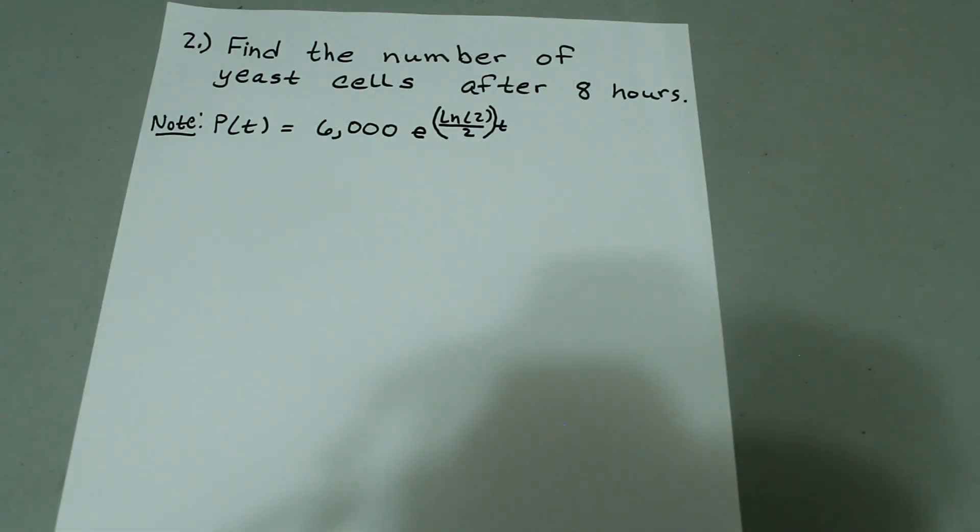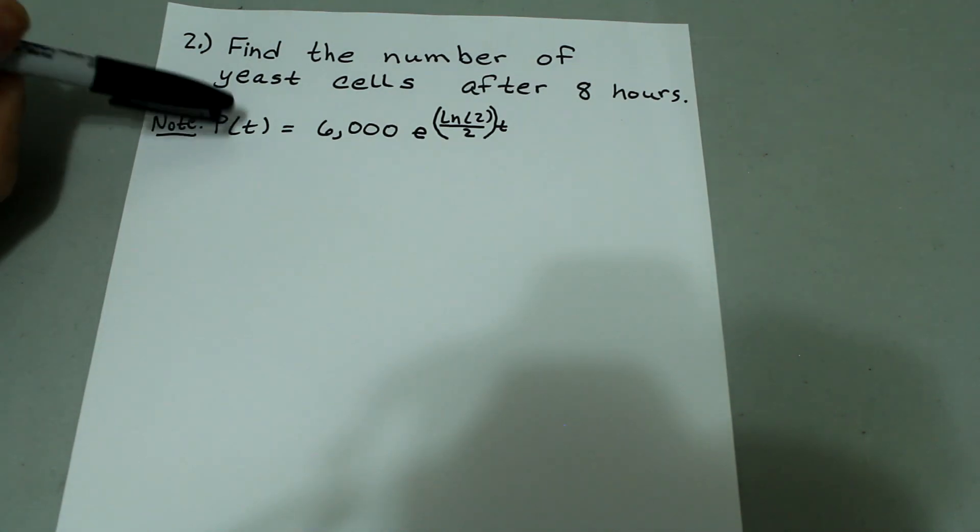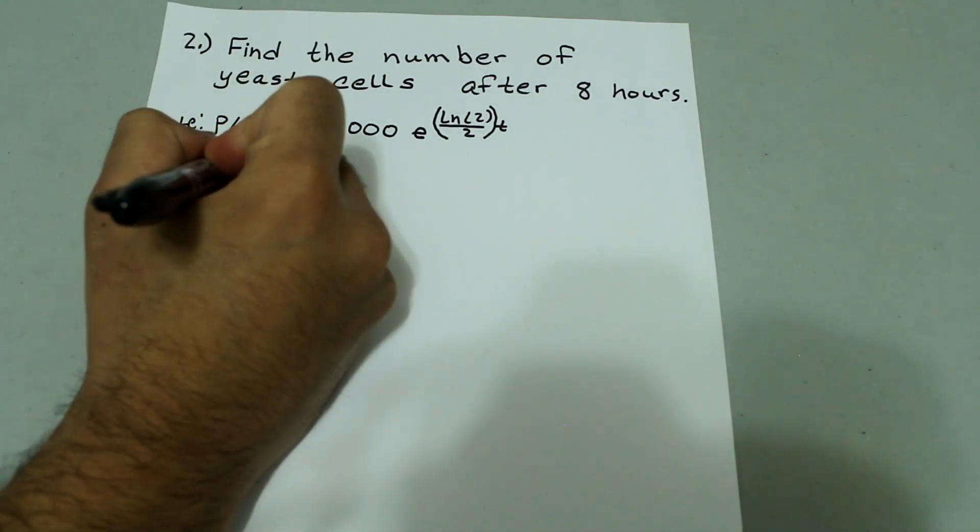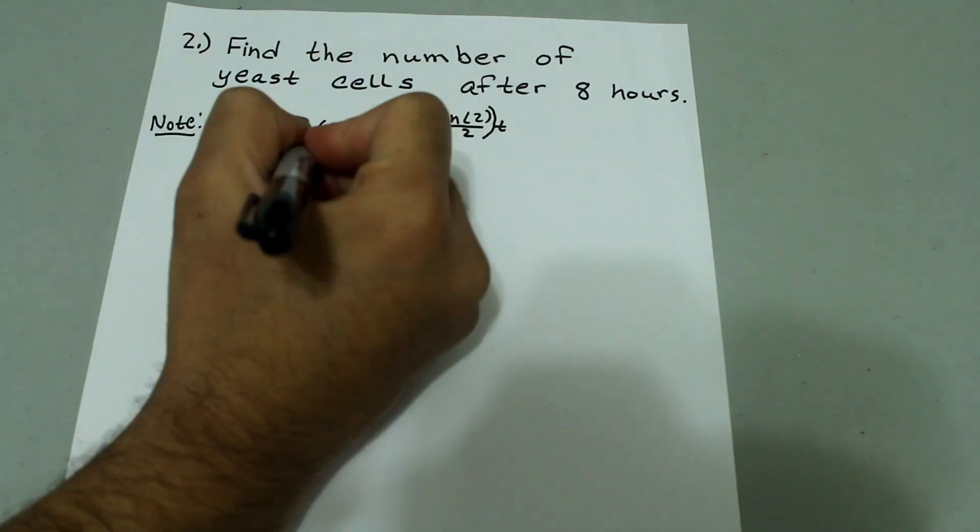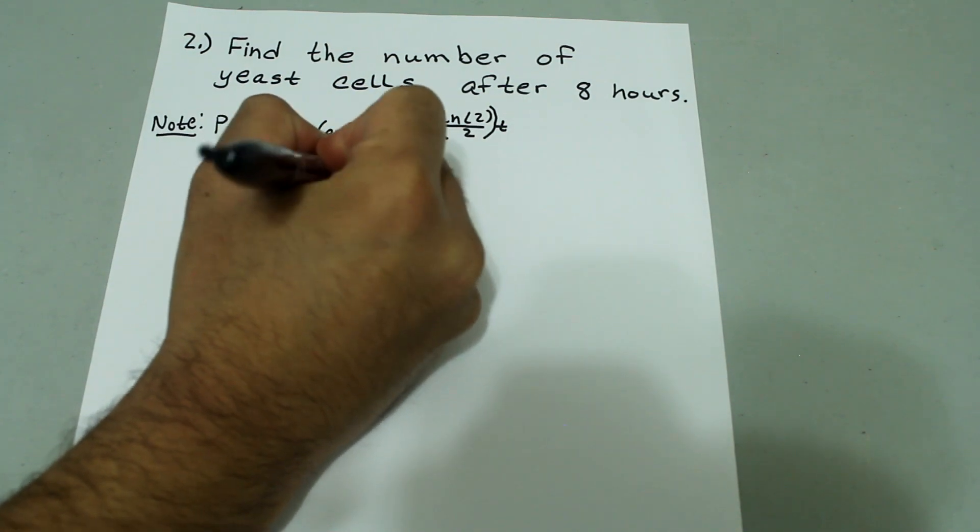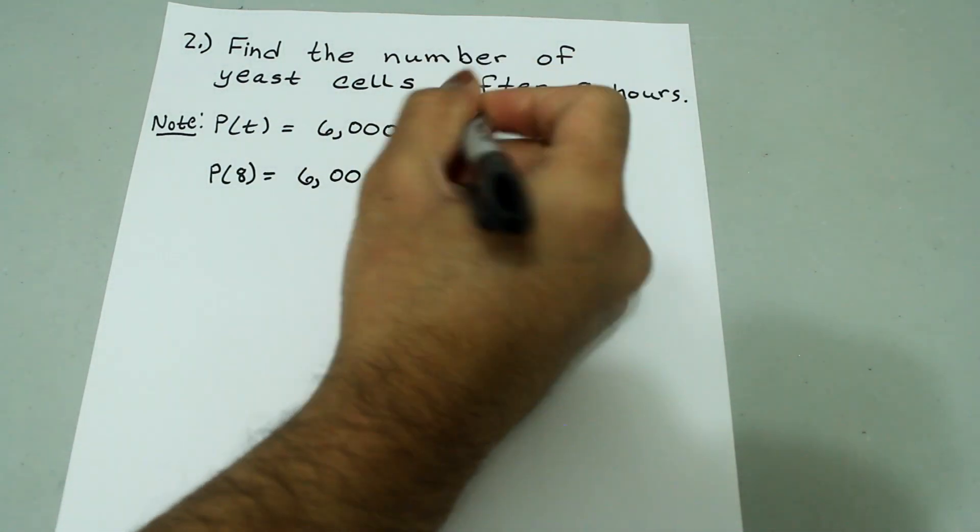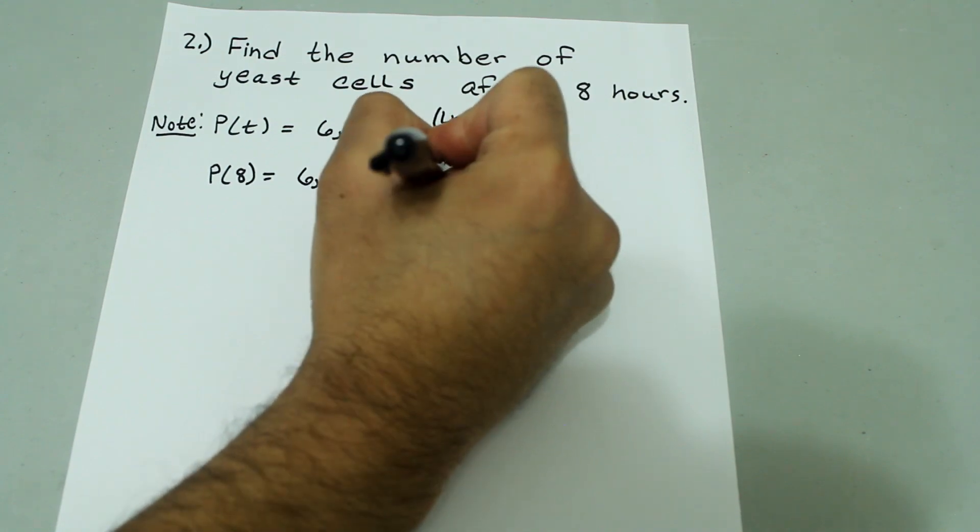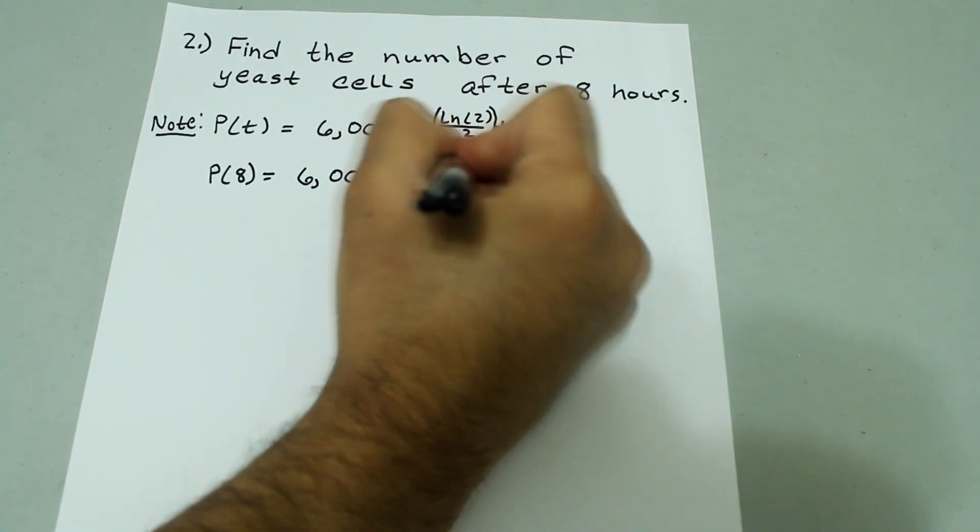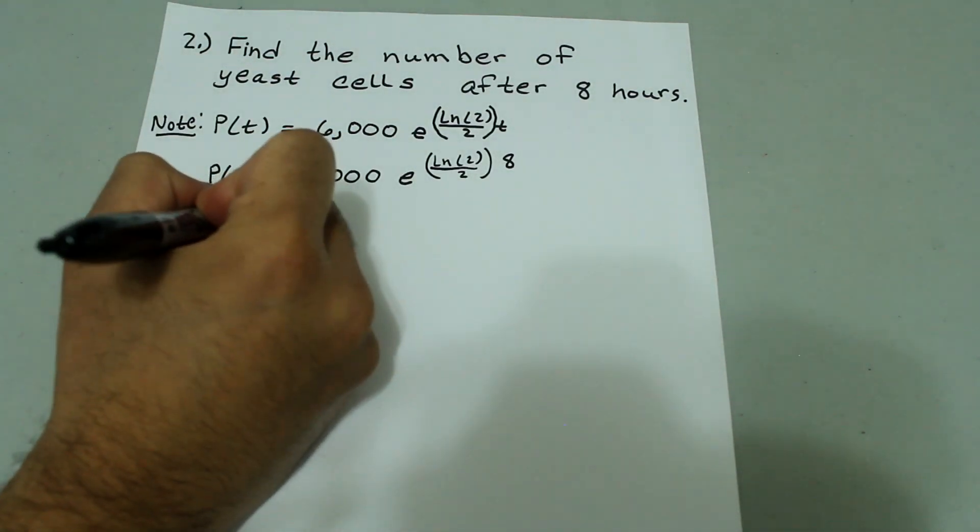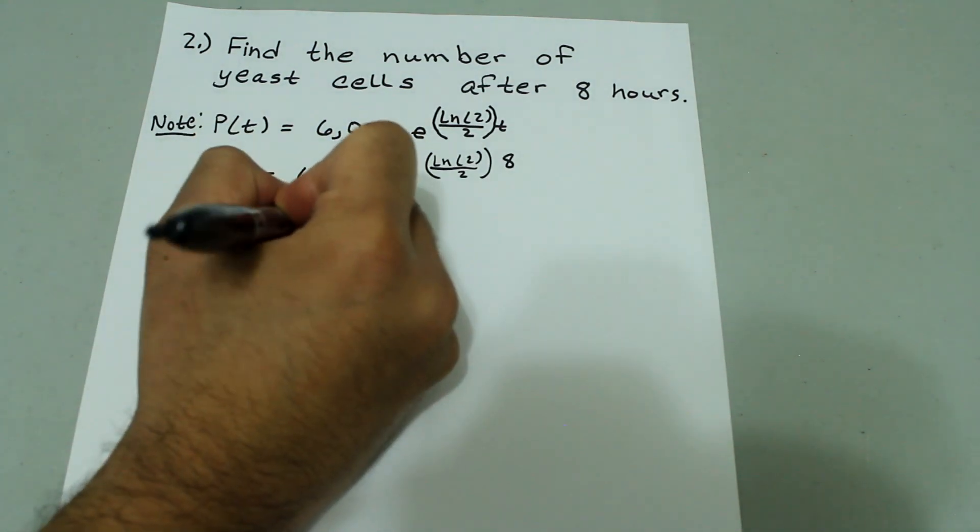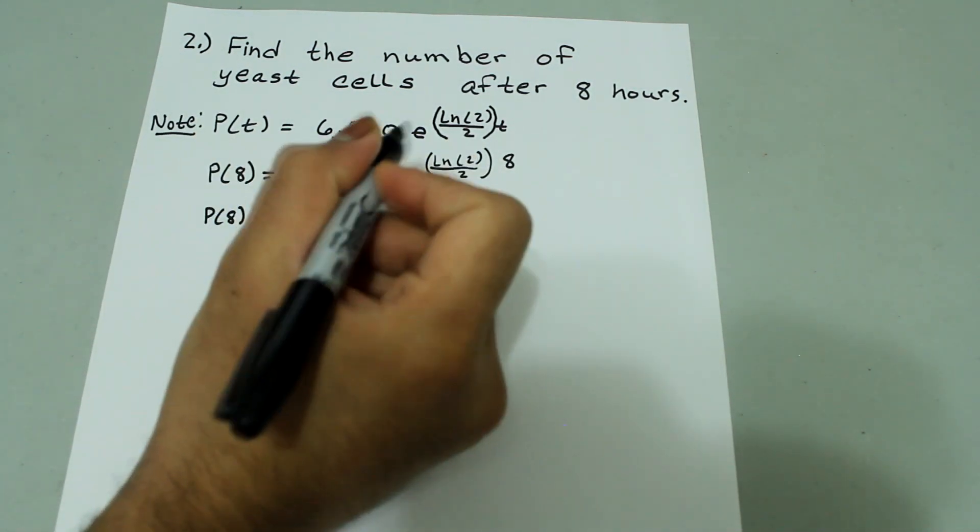Now number 2 asks us to find the number of yeast cells after 8 hours. And we just figured out what the expression for P(t) is, and this is just a simple plug and chug. So we're looking for P(8), which is when time equals 8, what the population is. And then all you have to do is say 6,000 e to the natural log of 2 over 2, which is the value of k, times 8 for the time. And that, when you plug it in, should give you 96,000 e to the natural log of 2.